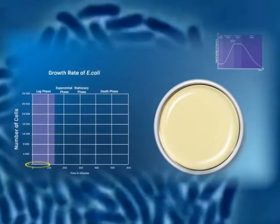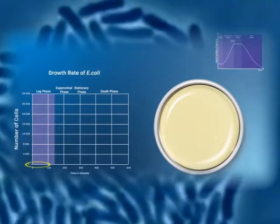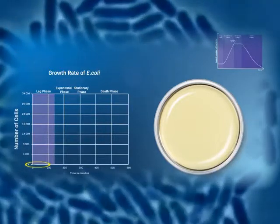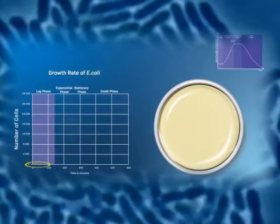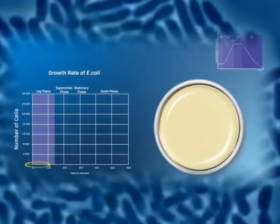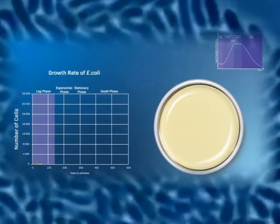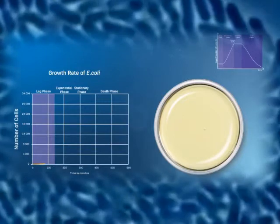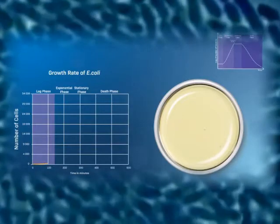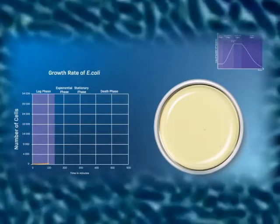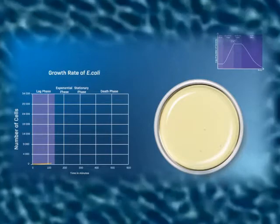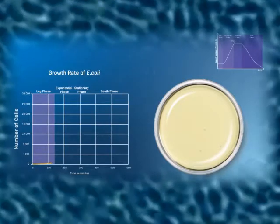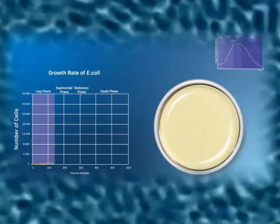Unicellular organisms repeat cell division in the process of survival, but gene mutations must have occurred. In that case, if the genes essential for survival are damaged, the cells will die. Therefore, gene replication inherently has a highly accurate reaction process.